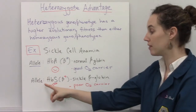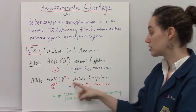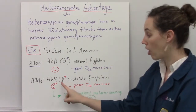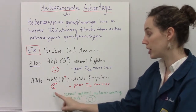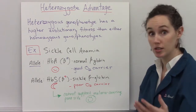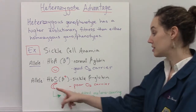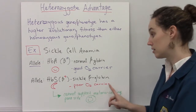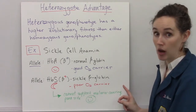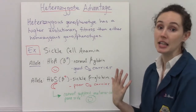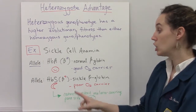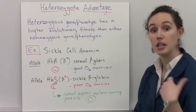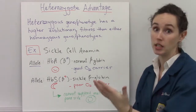If you have the HbS or sickle beta-globin allele, those cells are actually shaped like a half moon or a sickle, and these cells do not carry oxygen well at all. And if you're somebody that has two copies of this sickle allele, then you are said to have sickle cell anemia.